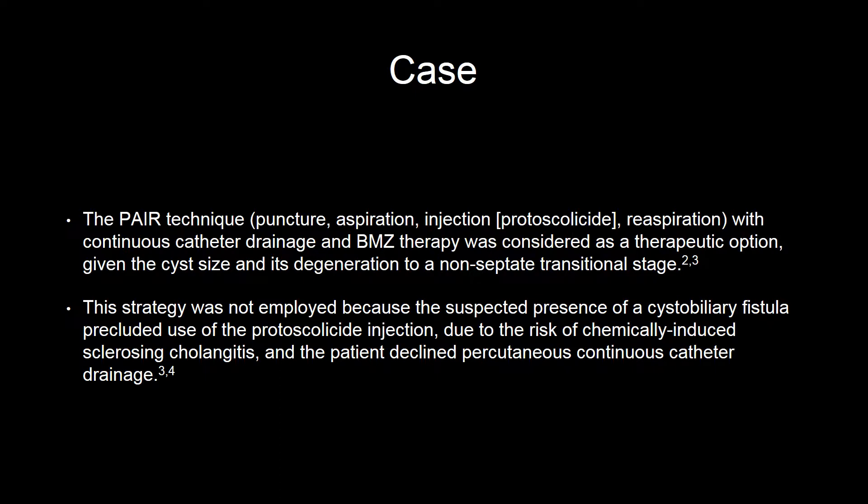The PAIR technique — which is puncture, aspiration, injection of a protoscolicide, and re-aspiration — along with continuous catheter drainage and benzimidazole therapy, was considered as a therapeutic option given the cyst size and its degeneration to a non-septate transitional stage. This strategy was not employed because the suspected presence of a cystobiliary fistula precluded use of the protoscolicide injection due to the risk of chemically induced sclerosing cholangitis, and the patient declined percutaneous continuous catheter drainage.